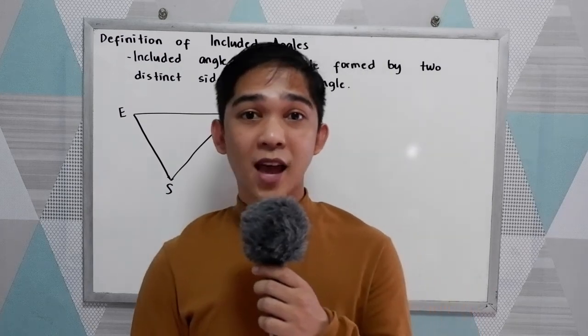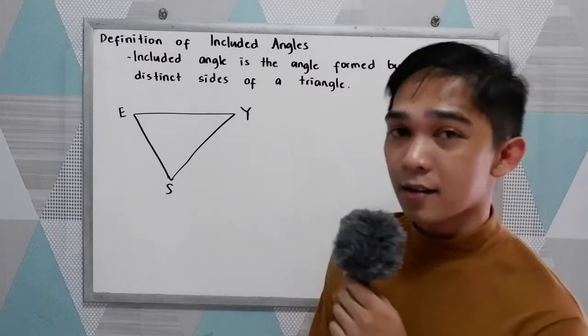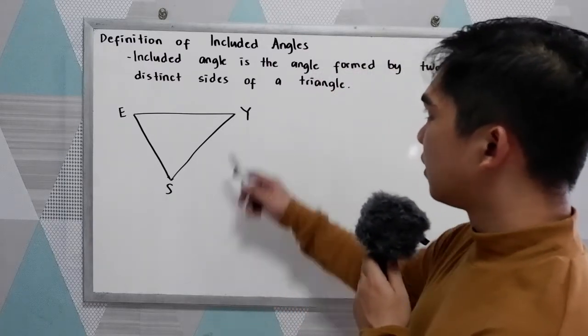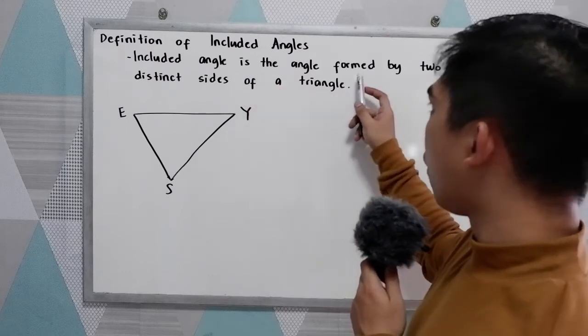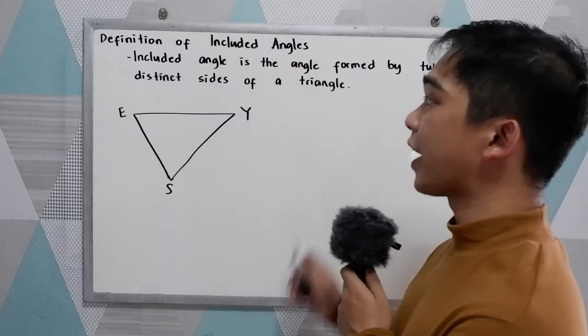Good day everyone. Today we will be discussing the definition of included angles. When we say included angles, these are the angles formed by two distinct sides of a triangle.